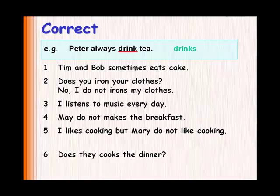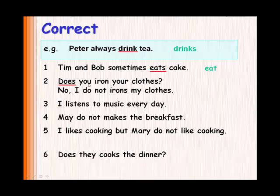You have six sentences — copy them down and correct them. Here are the answers. Tim and Bob sometimes eats cake — eats is wrong because we don't need an S when the subject is plural. Tim and Bob sometimes eat cake. Does you iron your clothes? Does is wrong because you does not take does — it takes do. Do you iron your clothes?